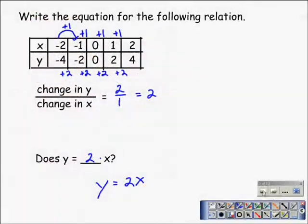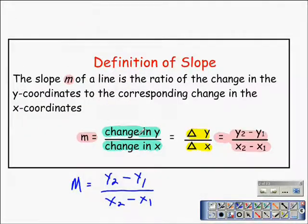The slope formula gives us the relationship between the change in the y direction, up or down, over the change in the x direction. And we can use this formula to find the slope between any two points on the coordinate plane. Let's take a look how to do that.